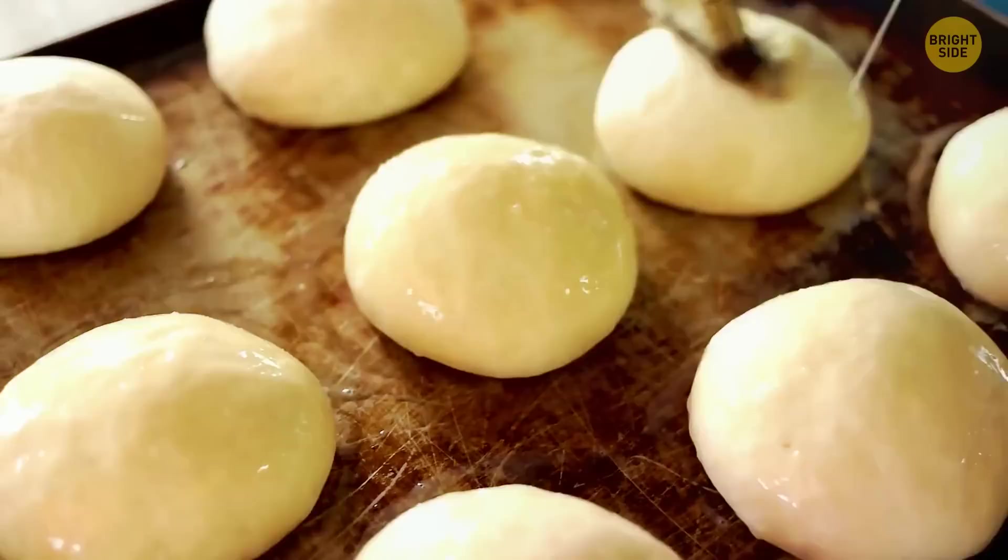Donuts have holes so that the inside and outside cook evenly. Before the holes were added, the inside would often be greasy and doughy while the outside was crisp.